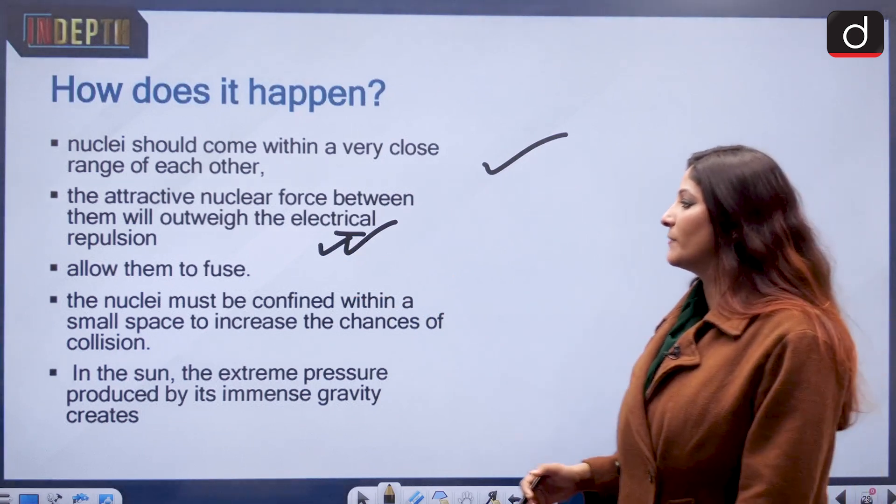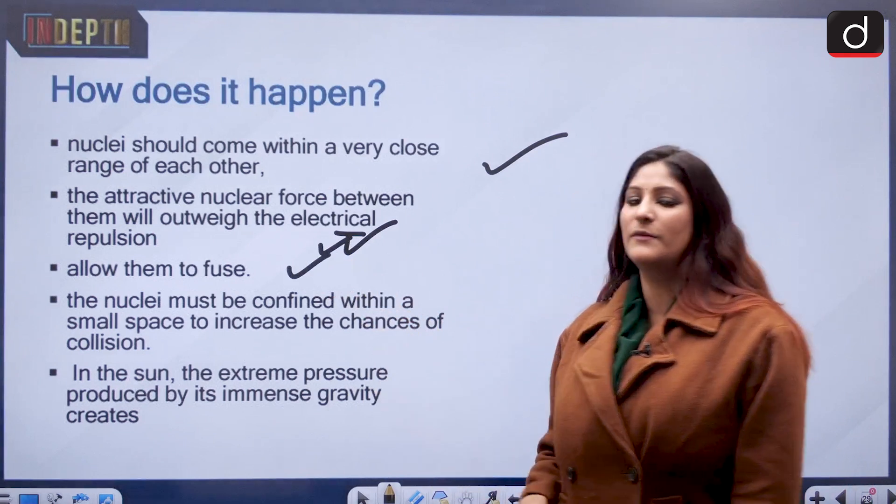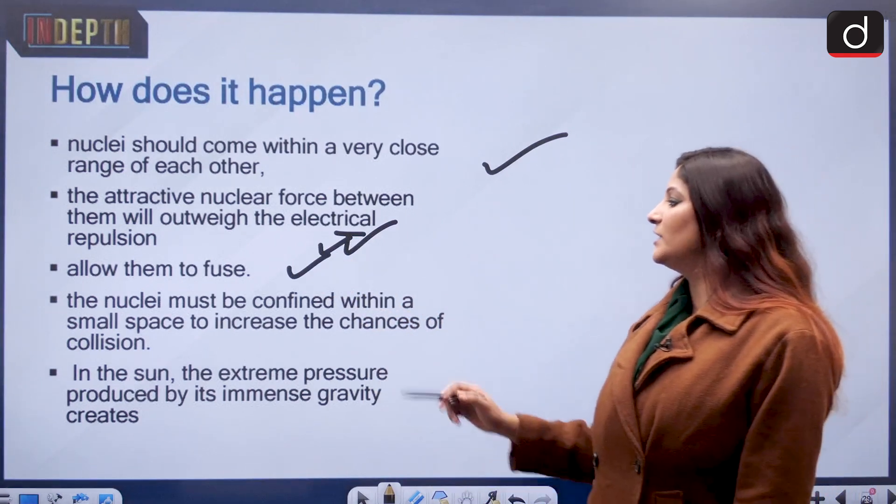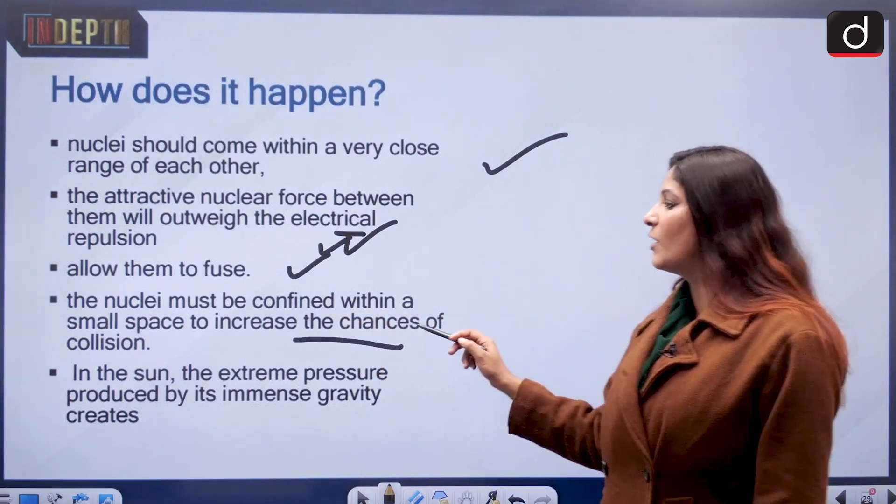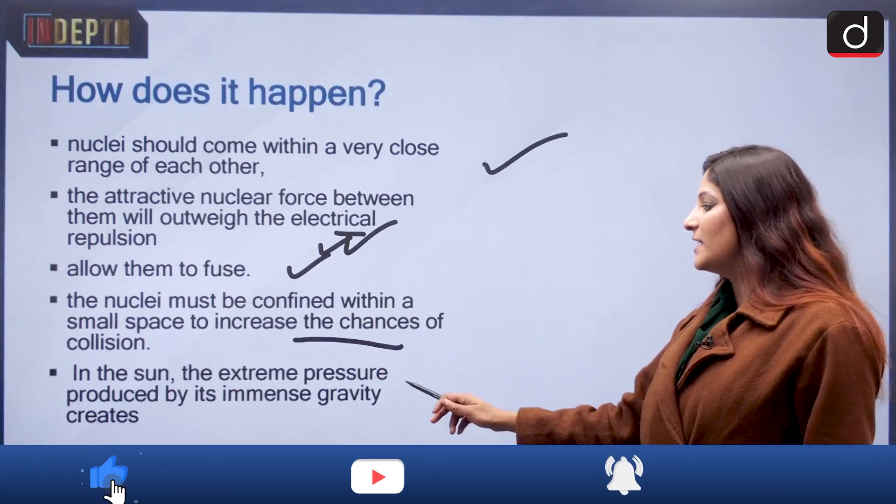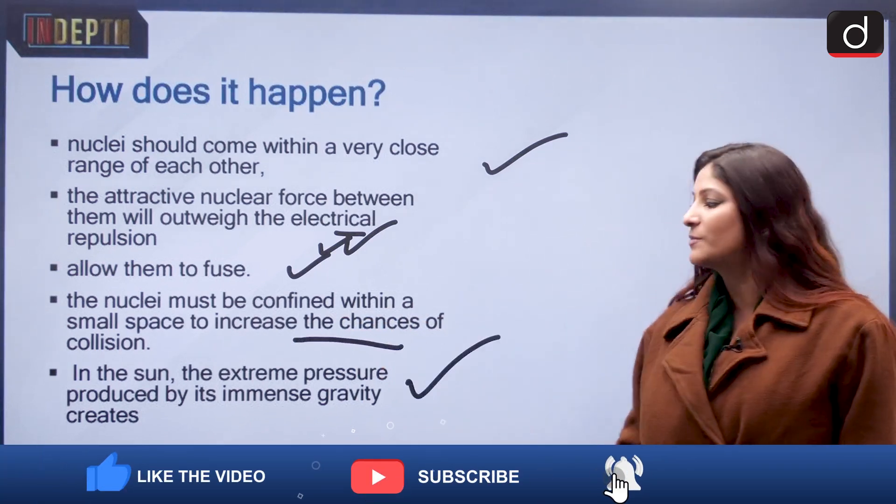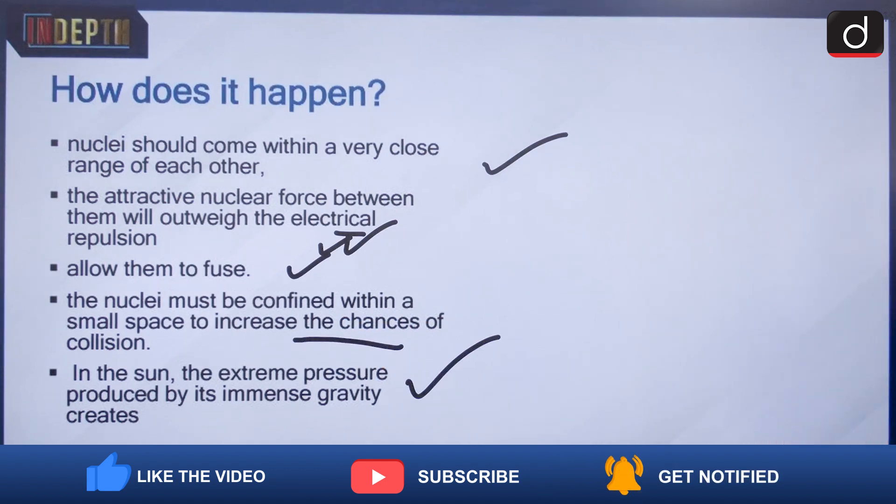Because of this, fusion happens and the nuclei must be confined within a small space so that collision can happen. In the sun, the extreme pressure which is produced by high temperatures and gravity is the reason for the nuclei to come close to each other.